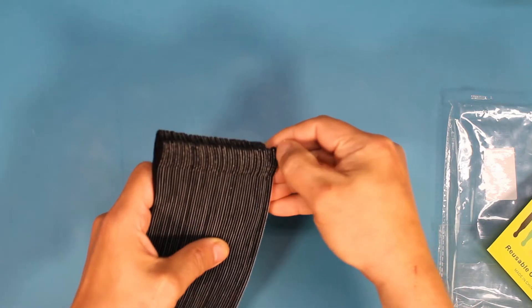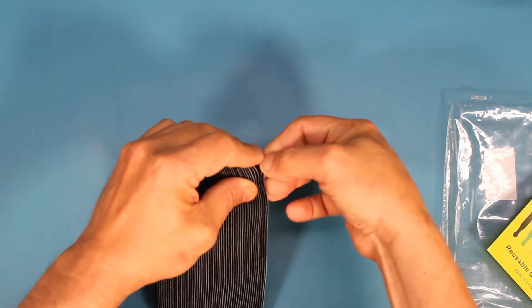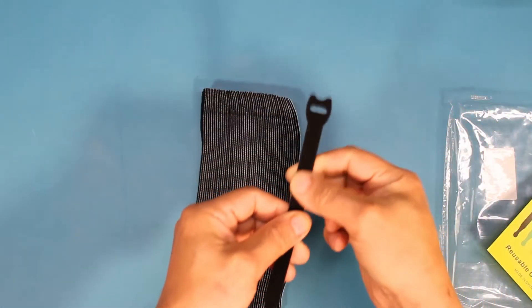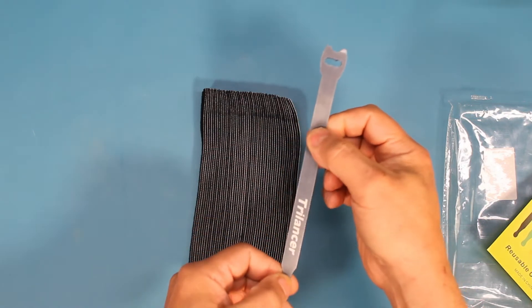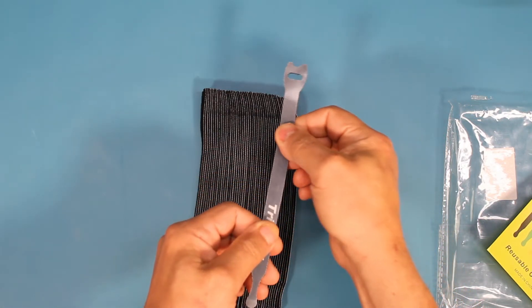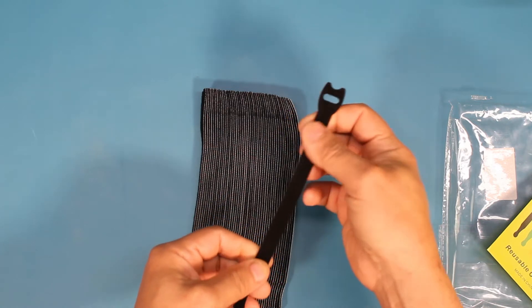They come in different colors. I've got just black. Basically a piece of plastic. It's tough plastic actually. And felt on the one side.